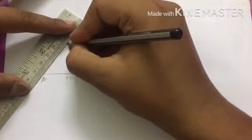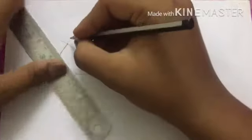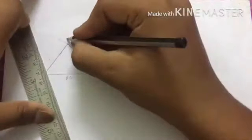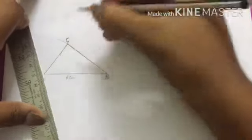Cut an arc where the two arcs meet. Join A and B to that point. This is C.